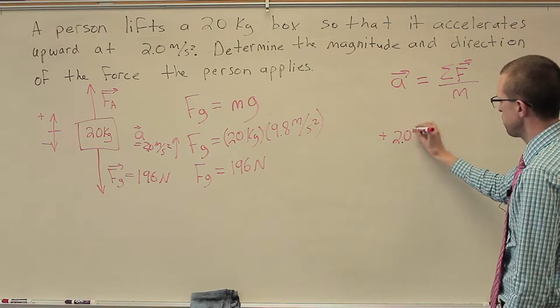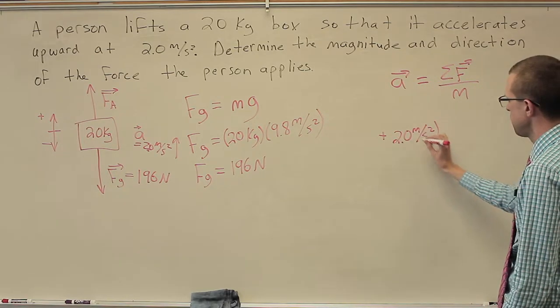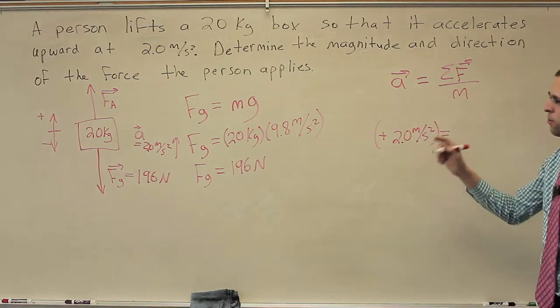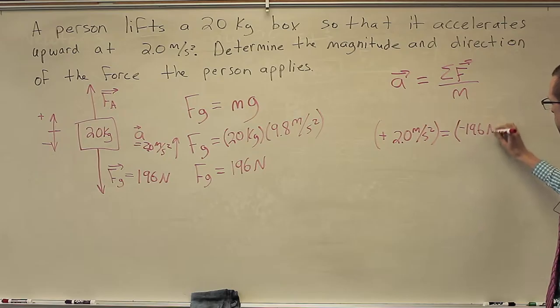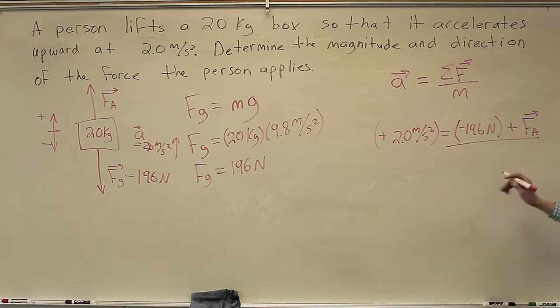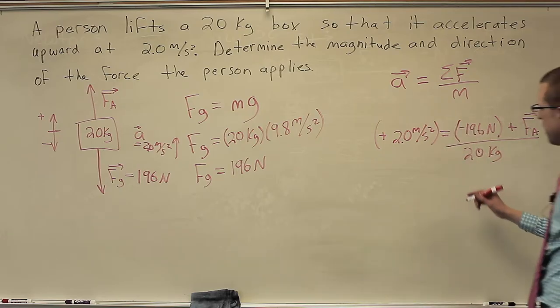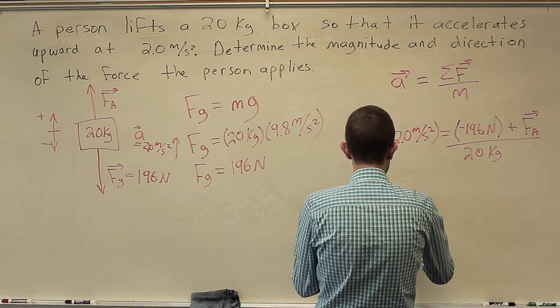We've got acceleration equals net force divided by mass. Acceleration is going to be upward. I think I'll call upward the positive direction and downward negative. So that'll be a positive 2.0 meters per second squared. And that's equal to, let's see, we've got a negative 196 newtons plus an F A. And then we divide by the mass, 20 kilograms.